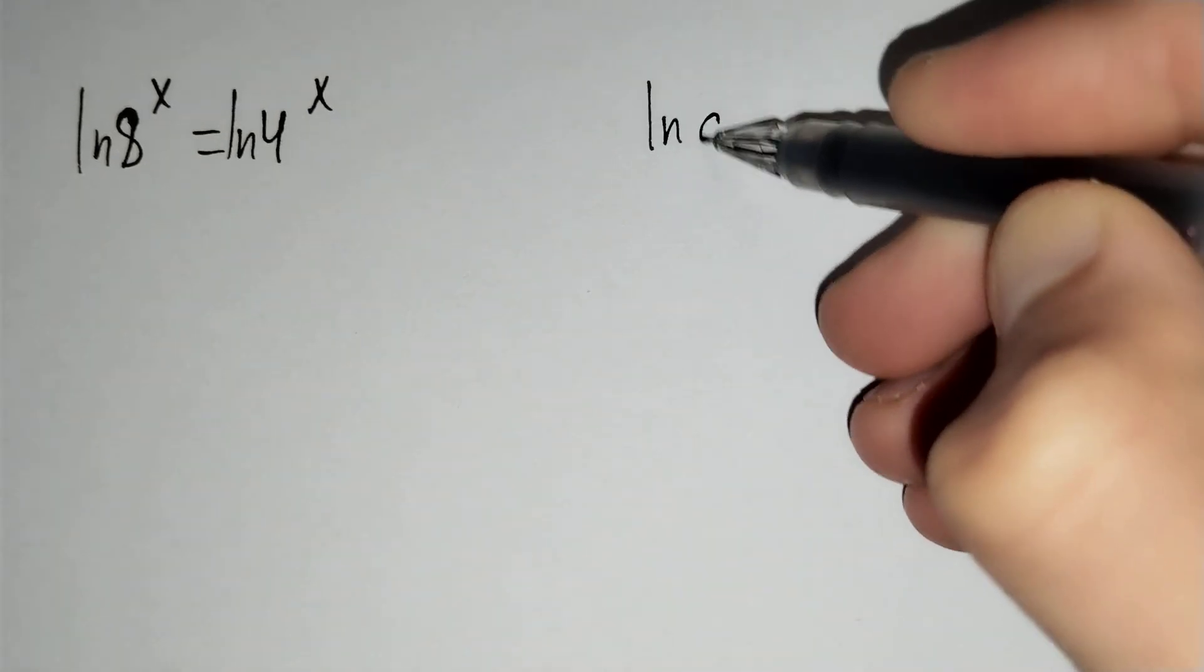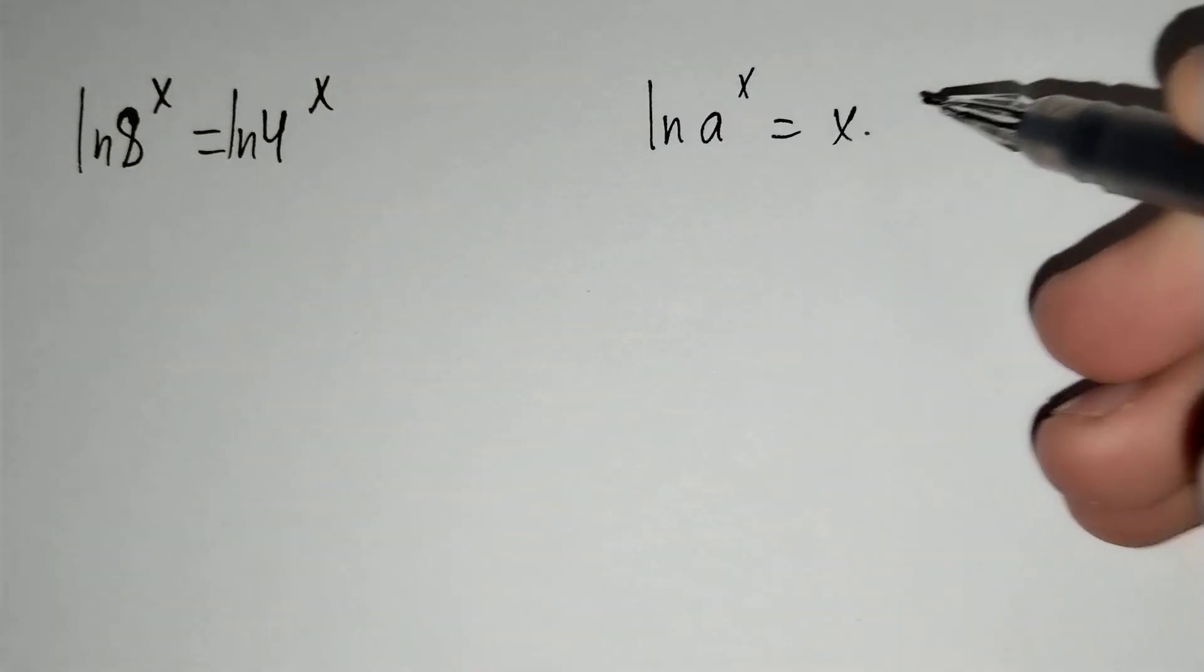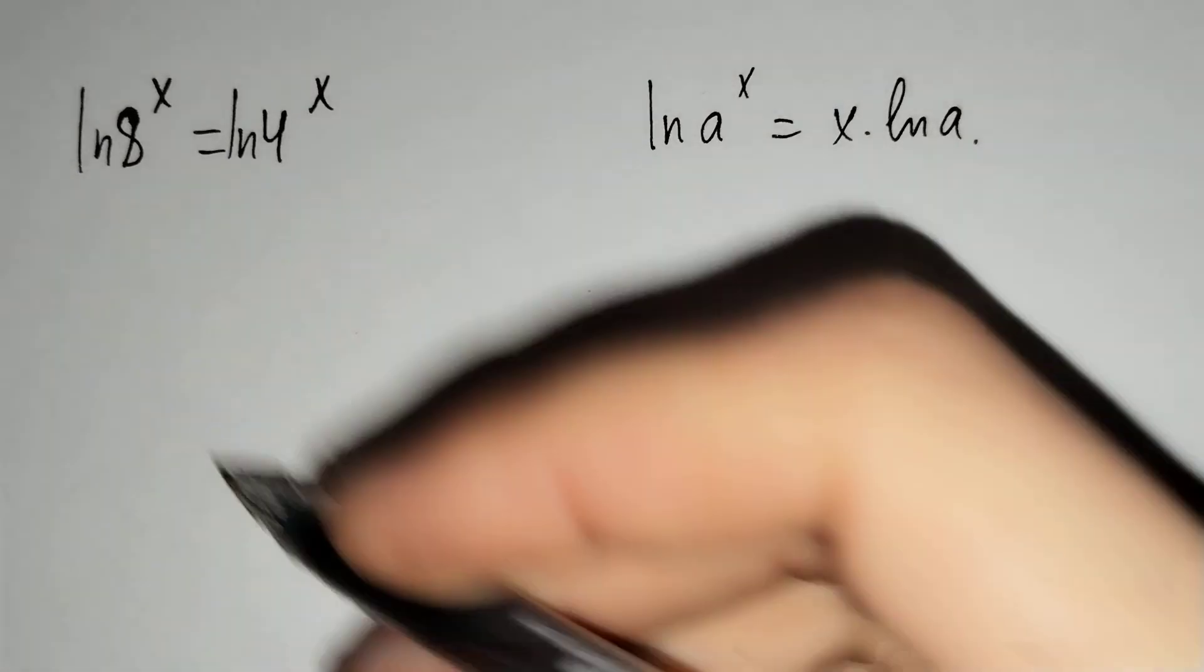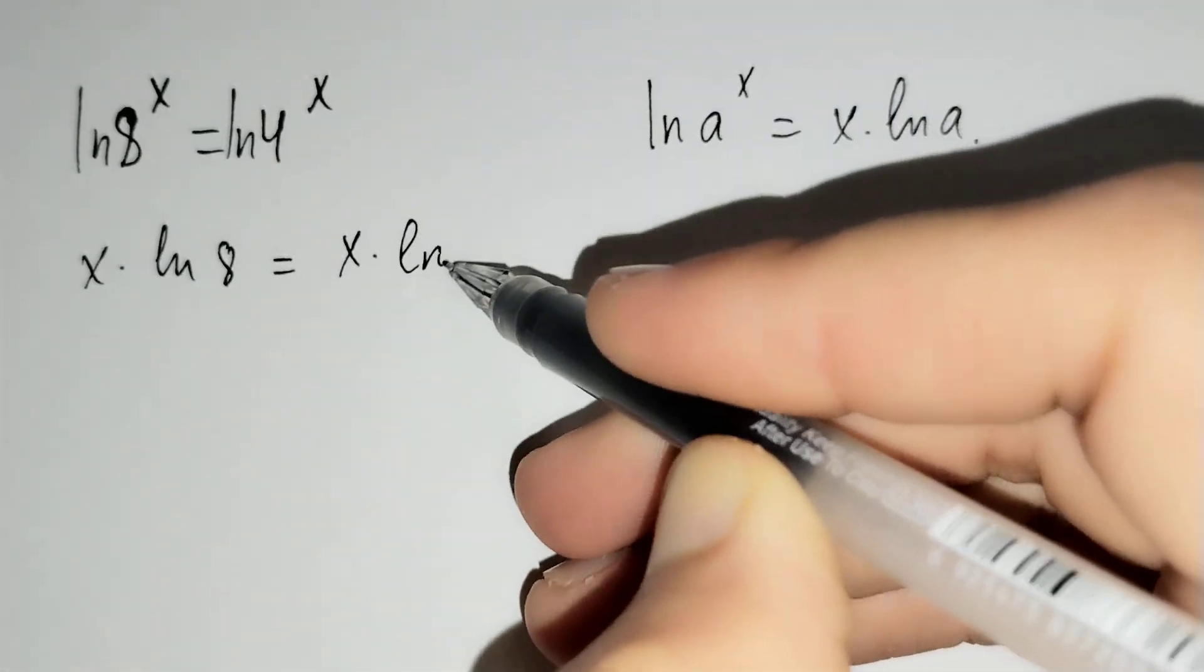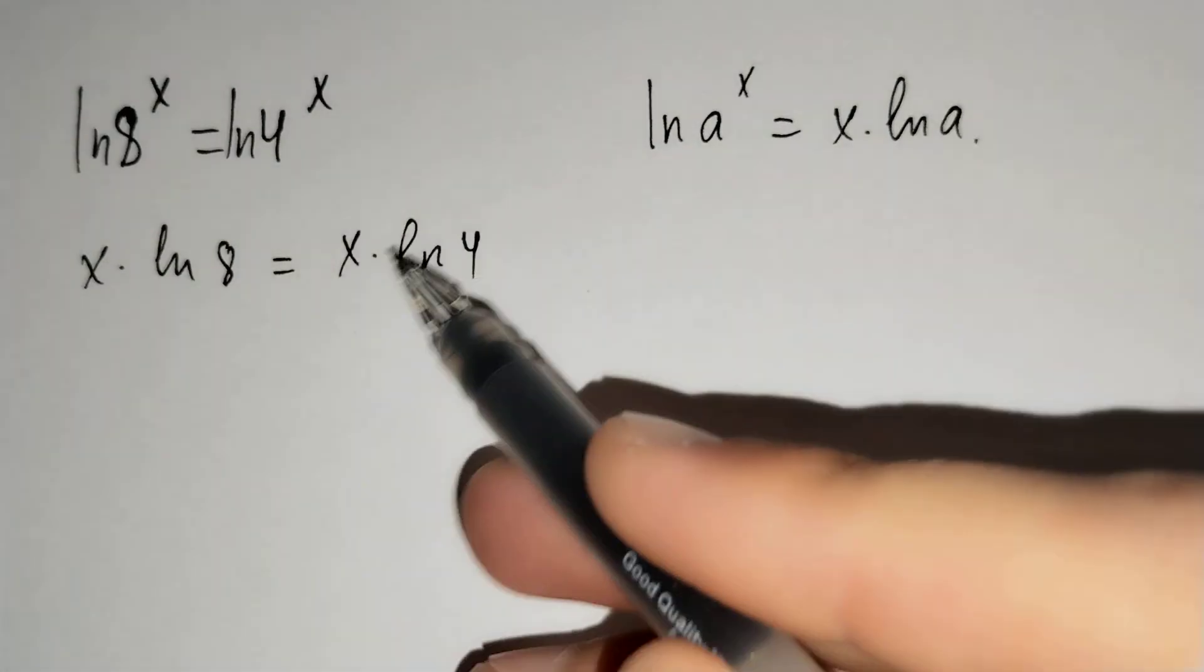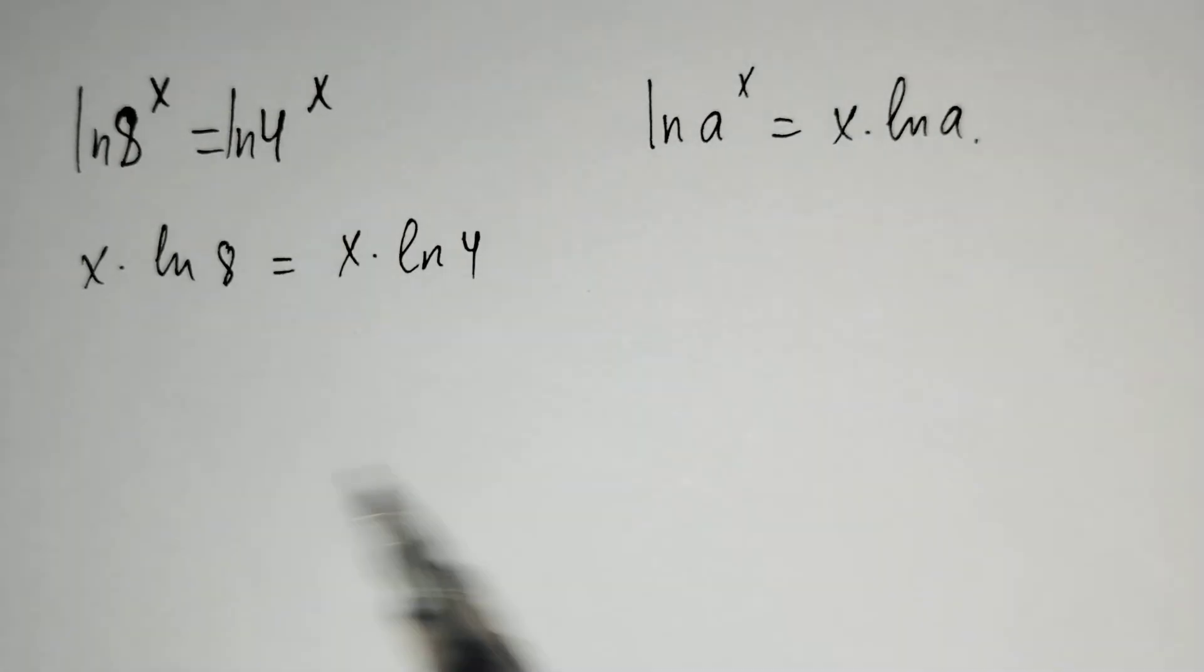And we know that ln a power x equals x times ln a. Using this formula, this is equal to x times ln 8 and equals x times ln 4. Then let's move this to the other side of our equation.